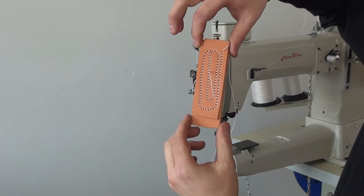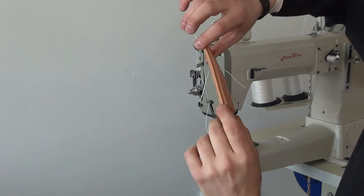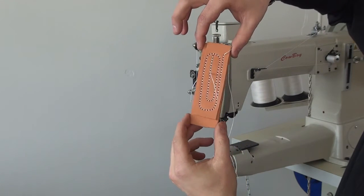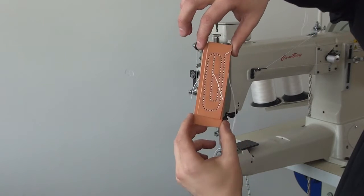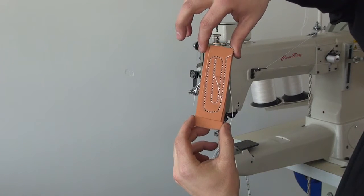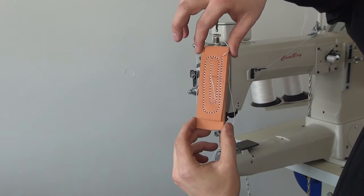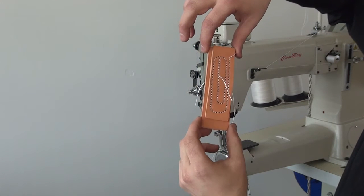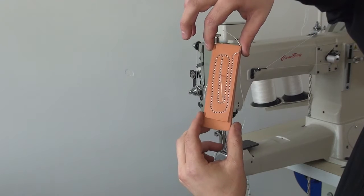It allows it to climb over multiple layers of material. The triple feed meaning that it has a compound feed design which would be composed of a needle feed, a feed dog, and also a walking presser foot. And this is essentially four-wheel drive for your sewing machine.